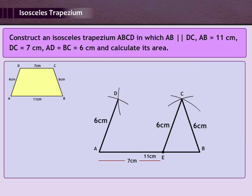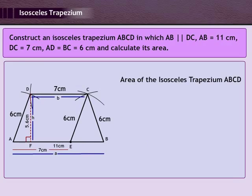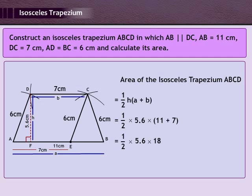Step 5: Join BC and EC. Step 6: With C and A as centres, draw two arcs of radii 7 cm and 6 cm respectively and let them cut at D. Step 7: Join AD and CD. Thus ABCD is the required isosceles trapezium. Step 8: From D draw DF perpendicular to AB; DF equals H equals 5.6 cm, AB equals A equals 11 cm, and CD equals B equals 7 cm. Area of isosceles trapezium ABCD equals half into H into A plus B equals half into 5.6 into 11 plus 7, giving 50.4 cm square.